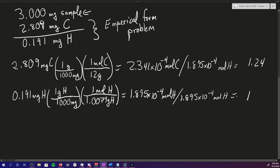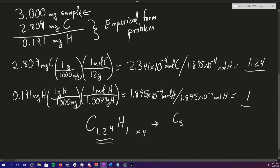With those numbers we can write an empirical formula of C₁.₂₄H₁, but an alarm bell should be going off — we can't have a decimal in a chemical formula. The only way to fix that is to multiply everything by 4 to get the lowest common denominator whole numbers, which gives us C₅H₄. This is our empirical formula.